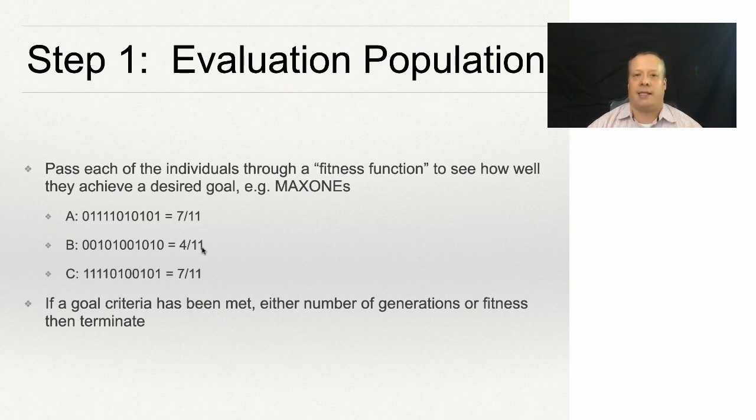We're going to pass each individual through a fitness function to see how well they achieve a desired goal. In this case, the max ones: A has seven elevens, B has four elevens, and C has seven elevens. If they had eleven ones, they'd be eleven over eleven and maybe the best.